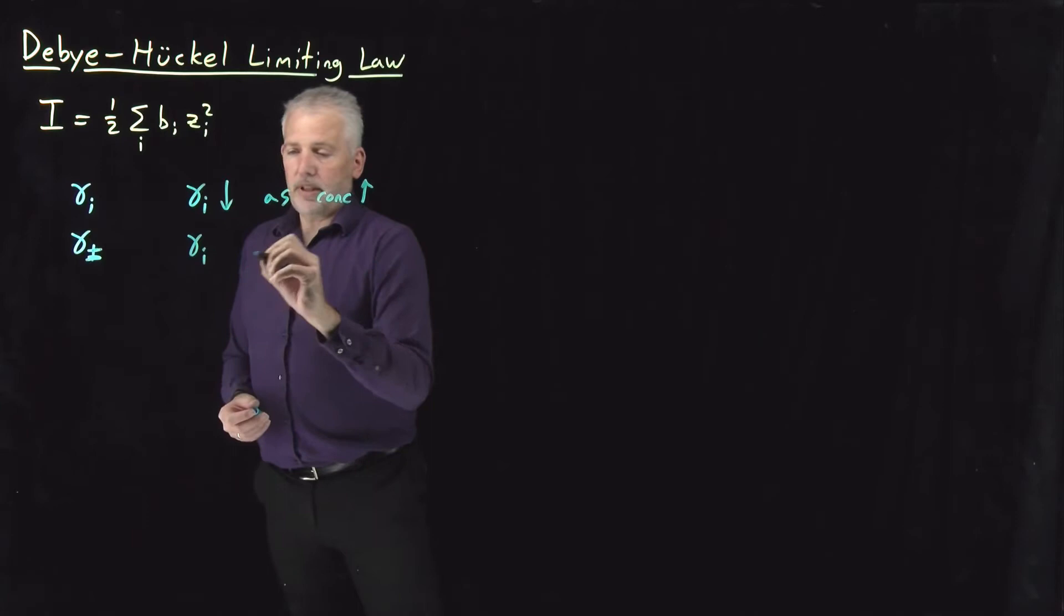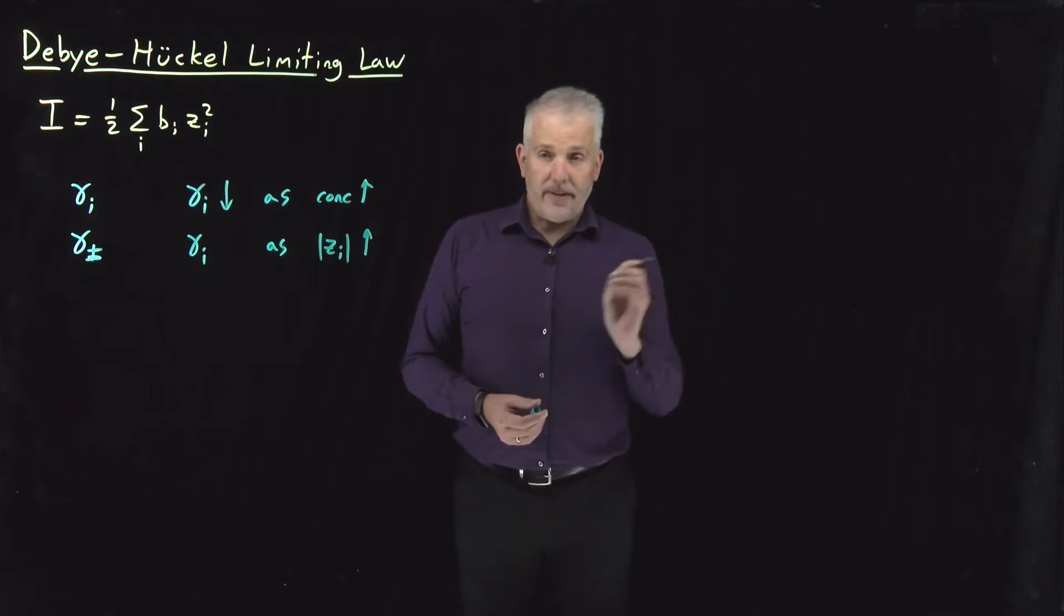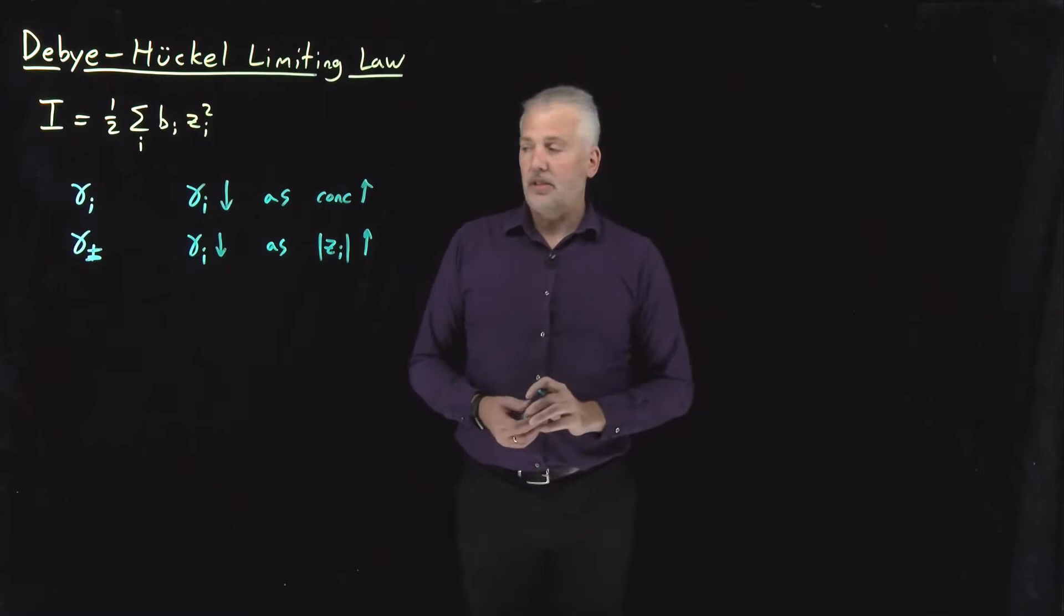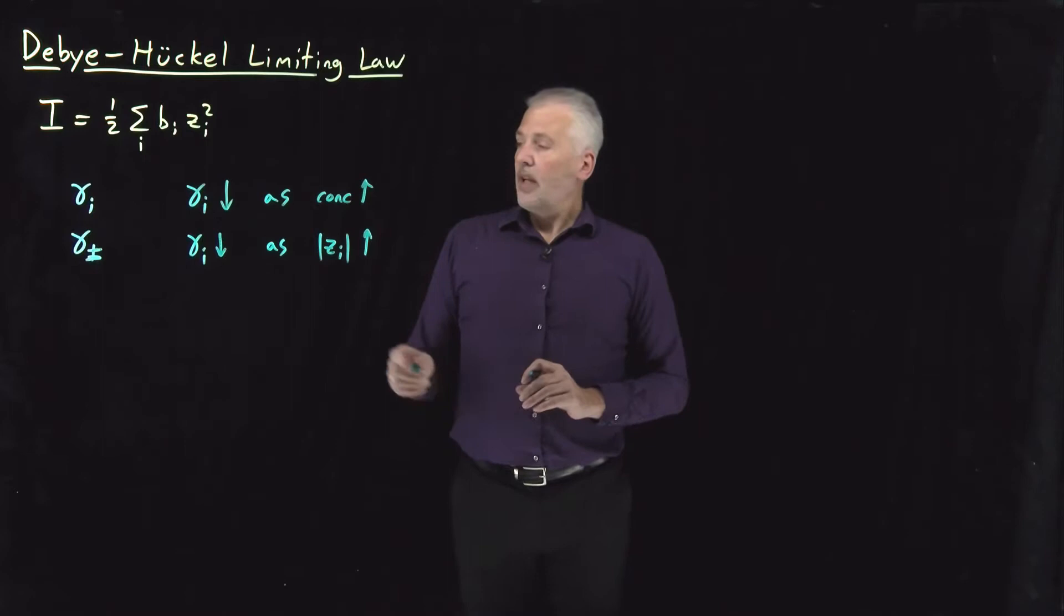The other thing we expect qualitatively is as the charge of an ion increases, let me put absolute value signs around that, so it doesn't matter whether it's a cation or anion, but a divalent cation like calcium will be less ideal than a monovalent ion like sodium. The activity coefficient is going to decrease. The solution is going to get less ideal as the charge of the ion increases. Likewise, a trivalent anion will behave less ideally than a divalent anion.